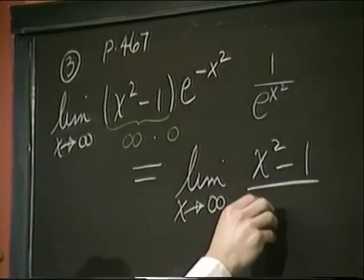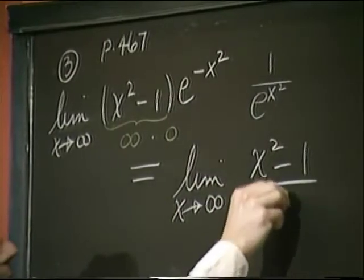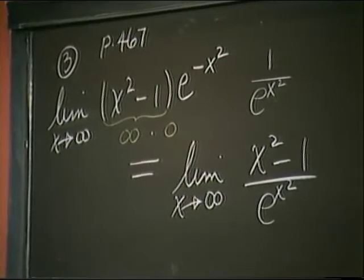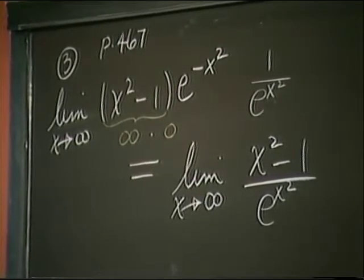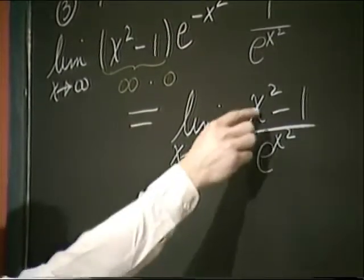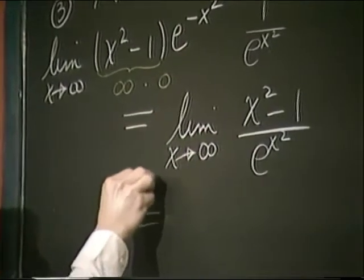x squared minus 1, move the e to the minus x squared downstairs to get e to the x squared down there. The reason for it, again, is to cook up something that L'Hôpital's rule is applicable to. In this case, both the numerator and denominator go to infinity.